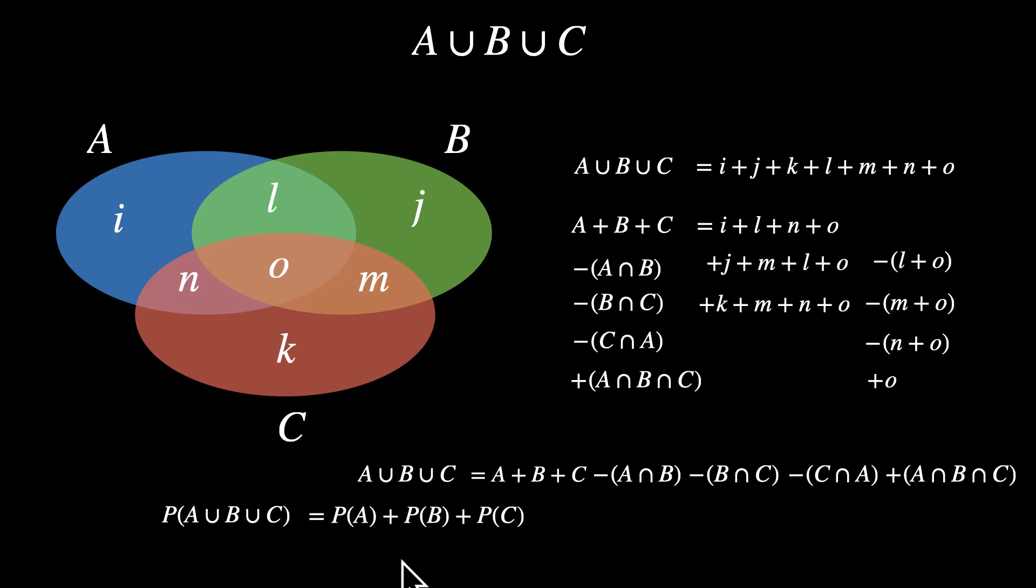And this gives us the formula for probability of A union B union C. That's probability of A plus probability of B plus probability of C minus probability of A intersection B minus probability of B intersection C minus probability of C intersection A plus probability of A intersection B intersection C.